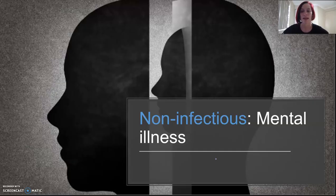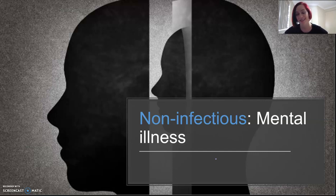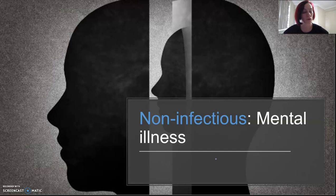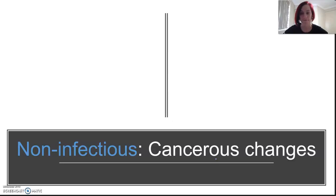Mental illness comes in many kinds and varieties with a variety of symptoms. There are some risk factors like trauma, social isolation, chemical imbalances in the brain, and drug use, but still a lot where the cause is unknown. Some are treatable with medication and cognitive therapies; some may not be.